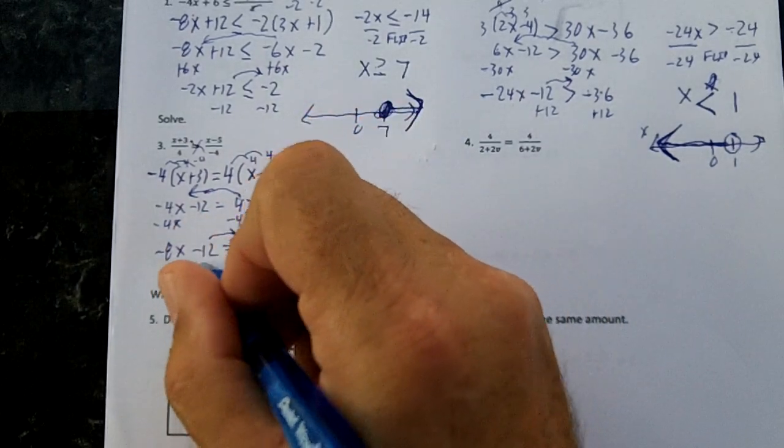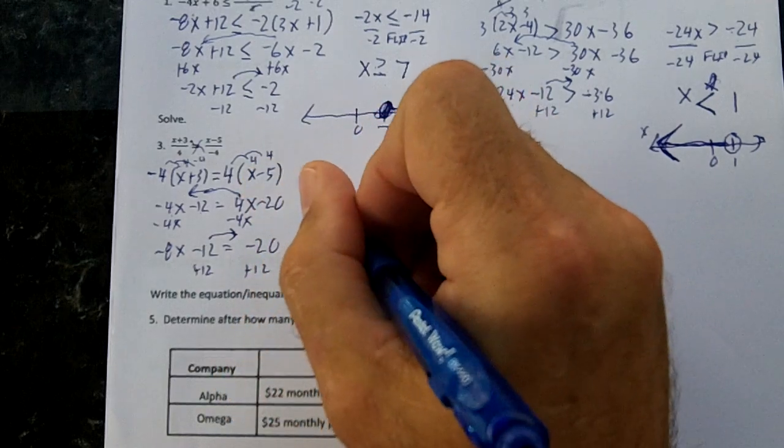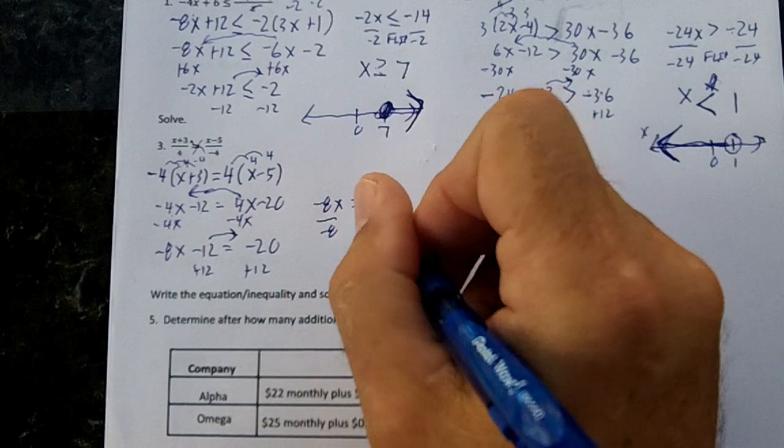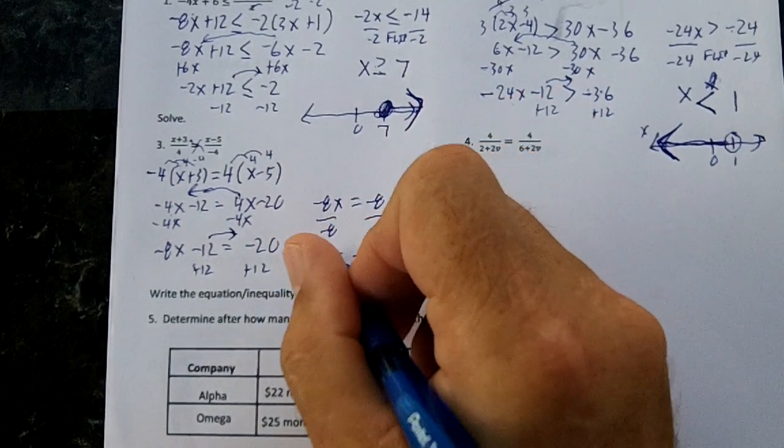Then I'm going to move the 12 over, and I'm going to end up with negative 8x equals negative 8. I'm going to divide by negative 8, and I'll end up with x equals 1.